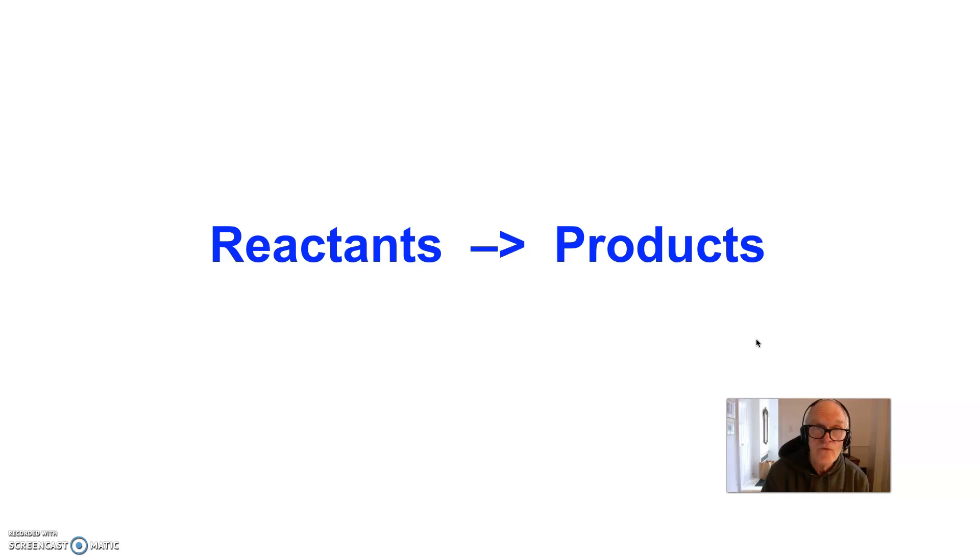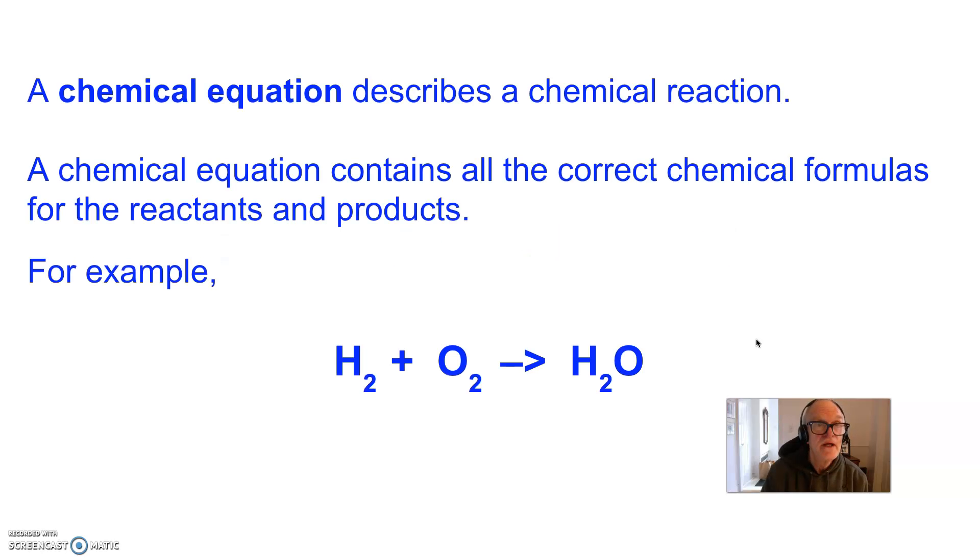But we can write a chemical equation to tell us about a specific chemical reaction. A chemical equation contains all of the correct formulas for the reactants and the products. Here's an example.